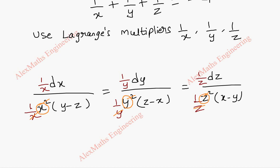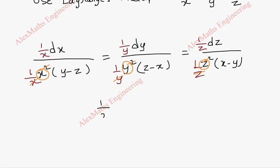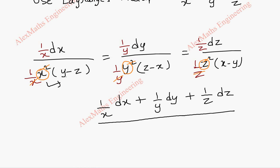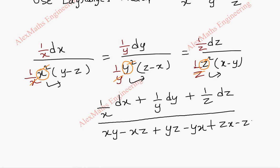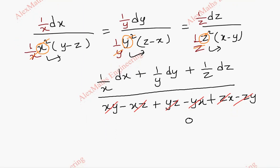Using the ratio property, we add all numerators: (1/x dx + 1/y dy + 1/z dz), divided by the sum of the denominators. Multiplying the outside terms: x(y−z) + y(z−x) + z(x−y) = xy − xz + yz − yx + zx − zy. Here xy − xy, xz − xz, and yz − yz all cancel, so the denominator becomes zero. We choose the multiplier so that terms cancel and simplify.